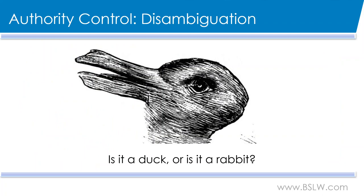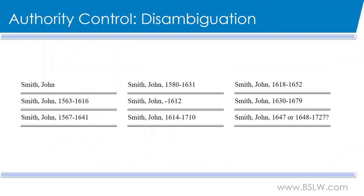So for example, if we were to search a catalog by author, we'd want to make sure that all of the titles by that author are returned. And furthermore, we'd want to exclude results for authors of a similar or identical name but are not the same as the author we are looking for. During the cataloging process, a cataloger should take the time to perform manual authority control by disambiguating the headings to ensure that the correct unique heading is applied to all titles from that author.